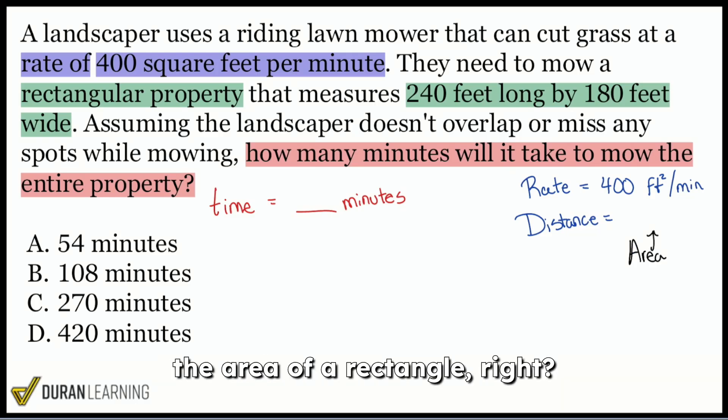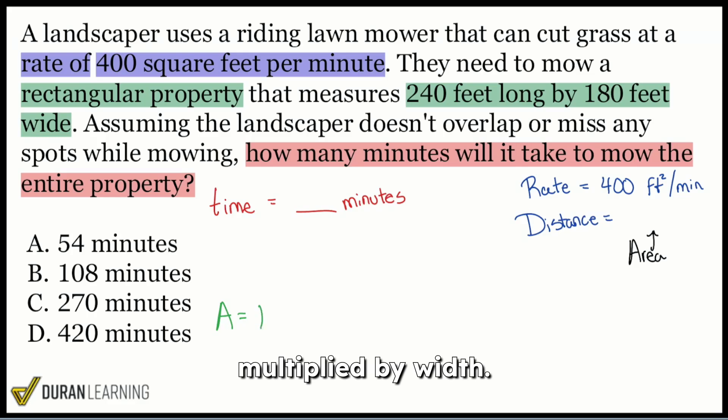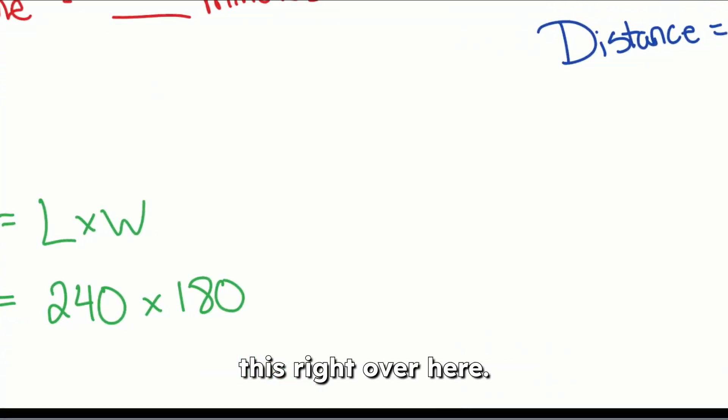And I think we know how to find the area of a rectangle, right? That's going to be length multiplied by width length times width. So with that area equals 240 feet long, multiplied by 180 feet wide, multiply those to get that distance. So let's go ahead and put this right over here.